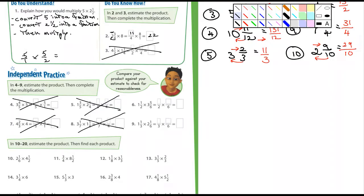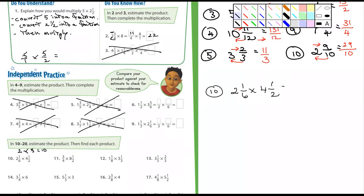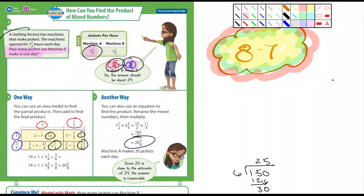One hundred and seventeen over twelve — so now divide one hundred and seventeen by twelve. Ten times twelve is a hundred and twenty, so it looks like it goes in nine times. Nine times twelve is one hundred and eight, so it's nine and three-quarters. The estimate was ten, the actual answer is nine and three-quarters.